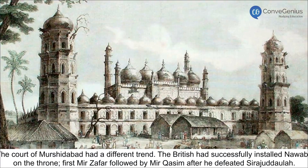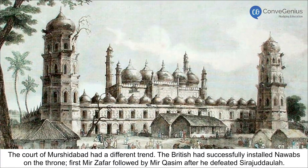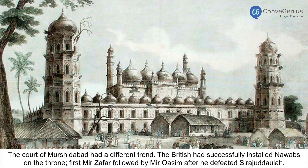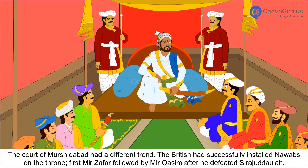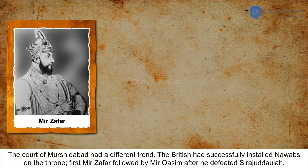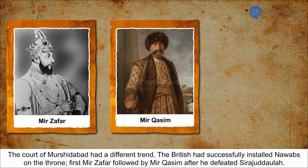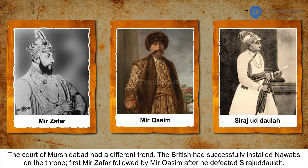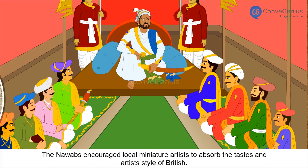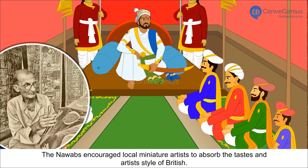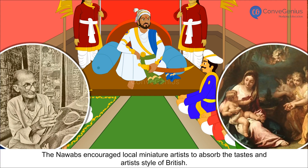The court of Murshidabad had a different trend. The British had successfully installed Nawabs on the throne — first Mir Jafar, followed by Mir Qasim, after he defeated Siraj Uddaula. The Nawabs encouraged local miniature artists to absorb the tastes and style of the British.